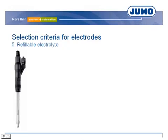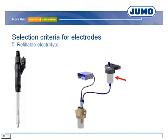In refillable electrodes there is a slight overpressure in the reference electrolyte, caused by the higher position of the storage vessel and possibly by primary pressure admission. The electrodes have one or more ceramic diaphragms, and due to the overpressure, there is a continuous flow into the measurement medium. This principle is normally used in cases of diaphragm blockage due to oil, applications in ultra-pure water, or measurement in media which poison the electrolyte.